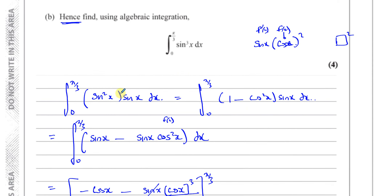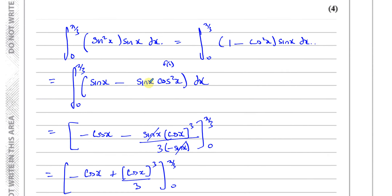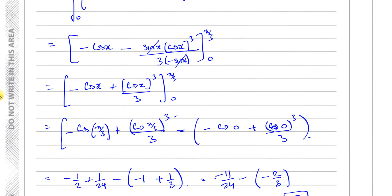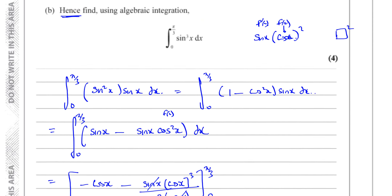In this particular question, the intended approach was using the identity from part A, because it says 'hence'. But sometimes they might ask you to integrate sine cubed x without any identity given, and you should know how to do it: split it into sine squared x times sine x, change sine squared x into 1 minus cosine squared x, expand the bracket, and you'll have two terms you can integrate. The sine x becomes minus cosine x, and the other term is done by reversing the chain rule. You get the same answer either way.